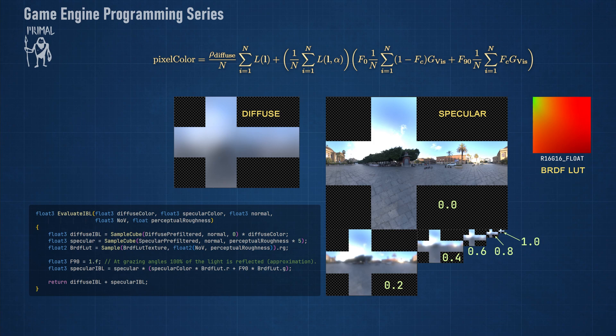Remember that the specular cube map has MIP levels that correspond to increasing values of perceptual roughness. In our implementation, we have six MIP levels, so multiplying the roughness by 5 will sample from the correct pair of MIP levels using bilinear sampling.